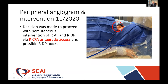Based on those findings, the decision was made to proceed with intervention. We obtained access in the right common femoral artery in an anterograde fashion. Those diagnostic images we just showed were via the left radial approach. The plan was to potentially use right dorsal pedal access, if needed, to cross that CTO from below.